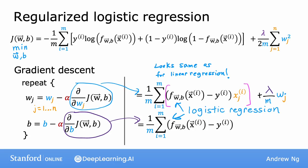And similar to linear regression, we will regularize only the parameters wj, but not the parameter b, which is why there's no change to the update you would make for b.